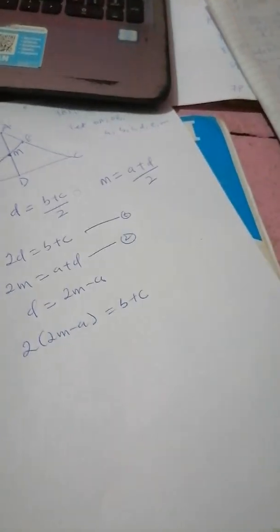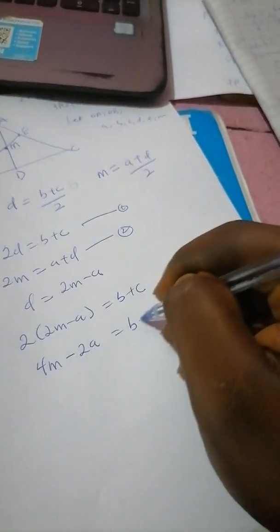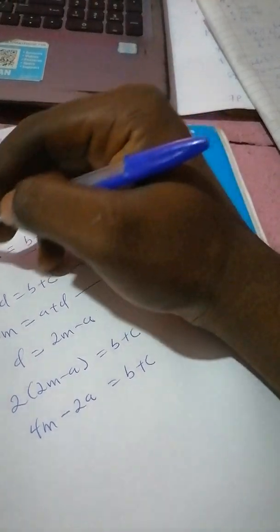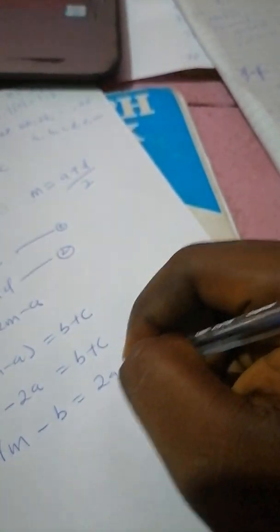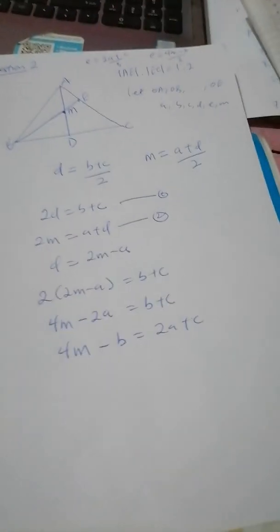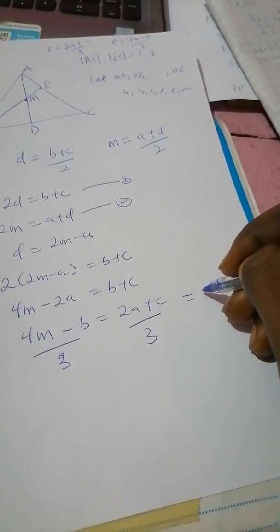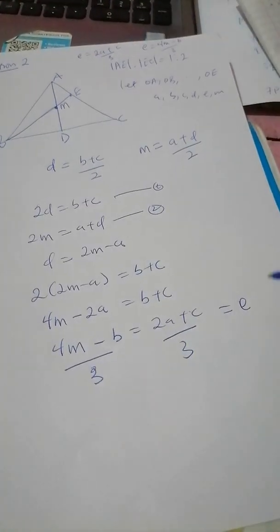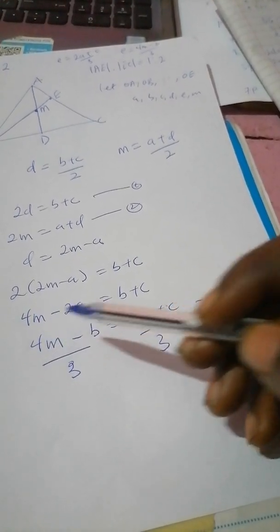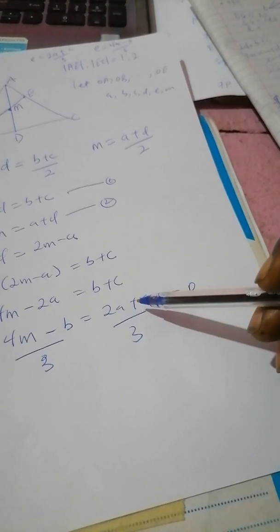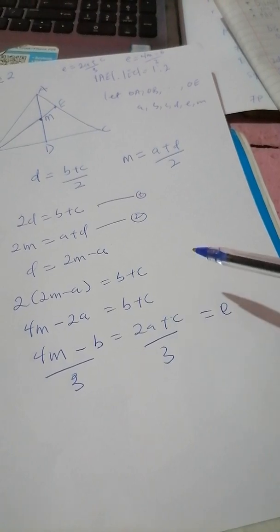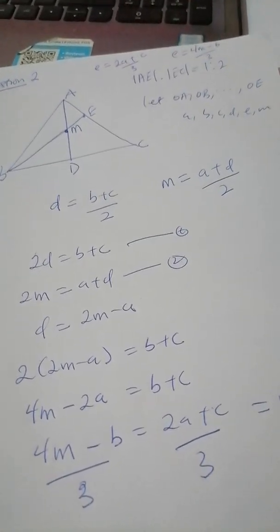We have 4m − 2a = b + c. Since A and C belong to one side and M and B to the other, we group them: 4m − b = 2a + c. Dividing both sides by three gives us e = (4m − b)/3 and e = (2a + c)/3. Therefore, E divides BM externally in the ratio four to one, and E divides AC internally in the ratio one to two. This completes the proof.